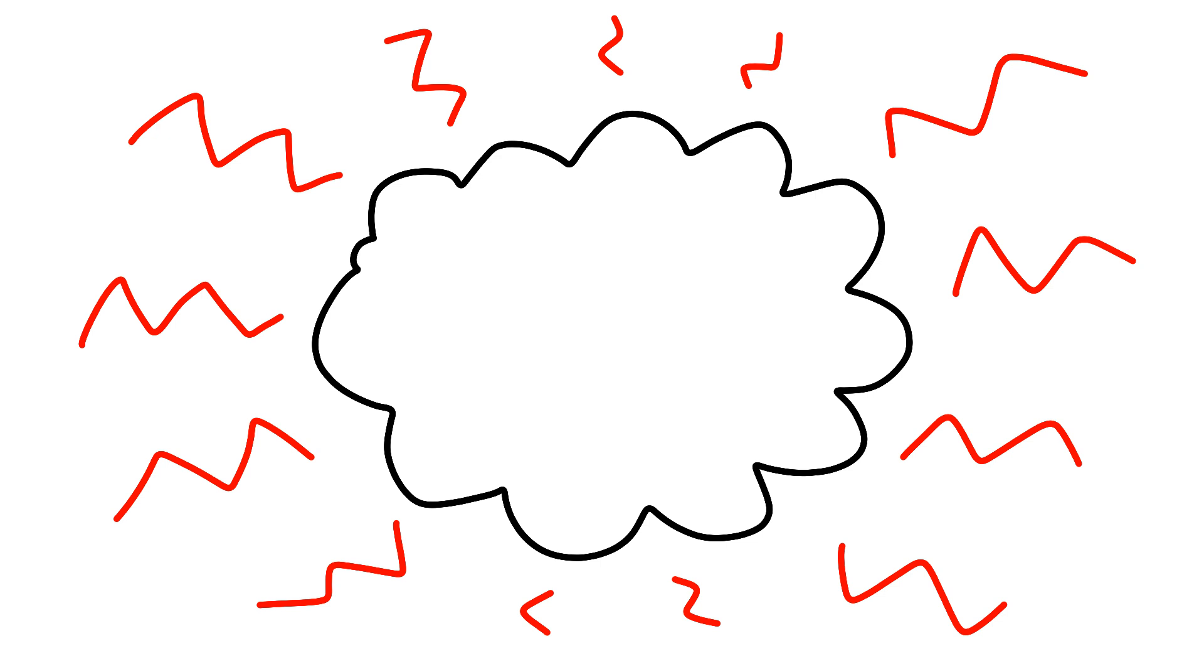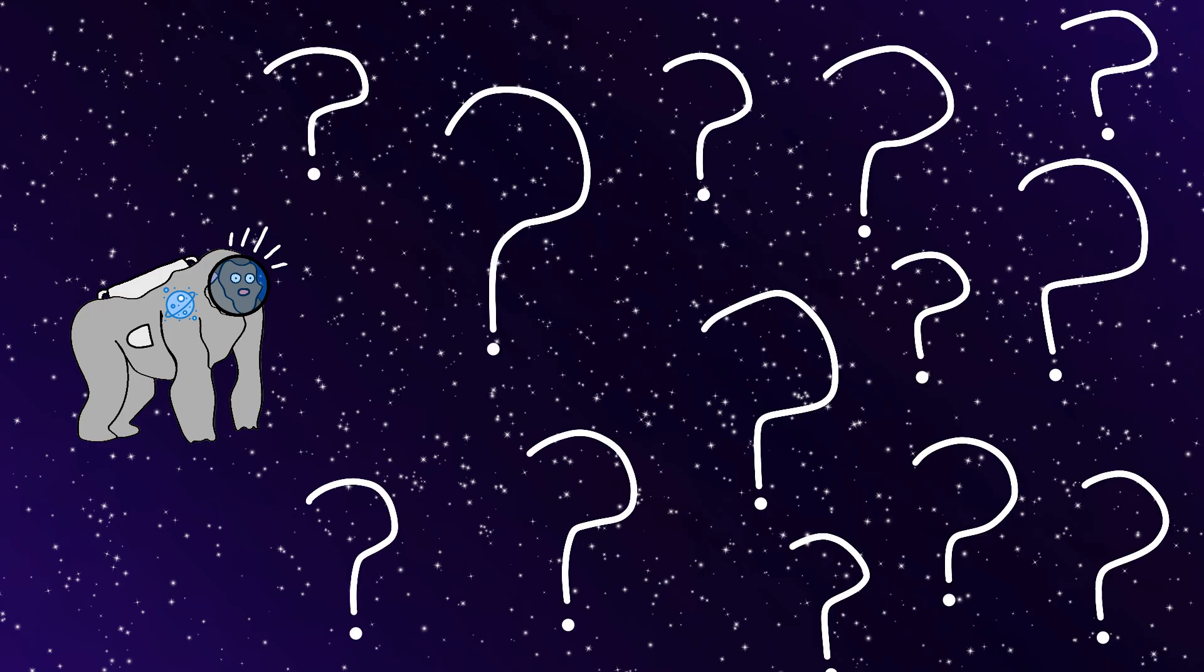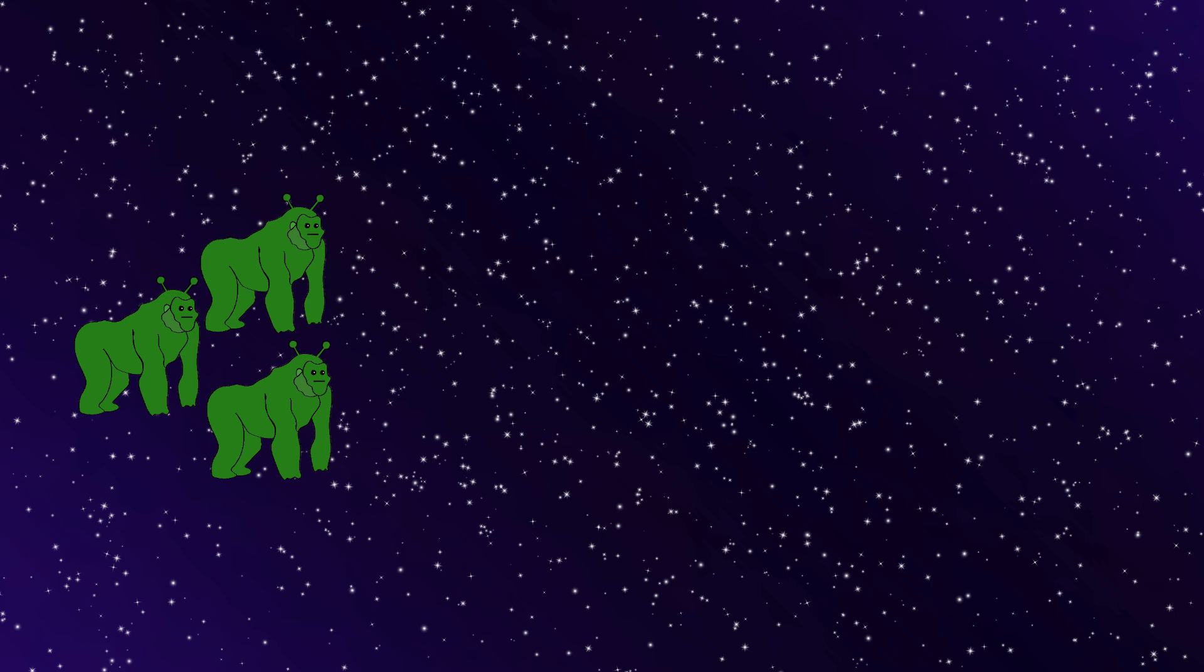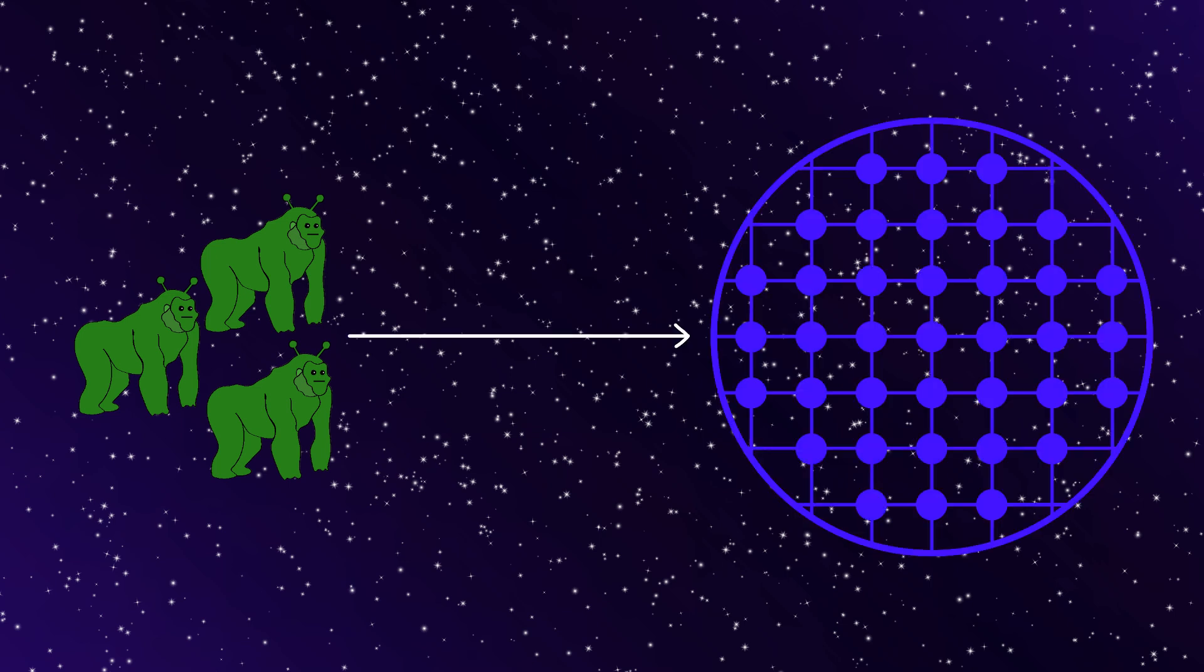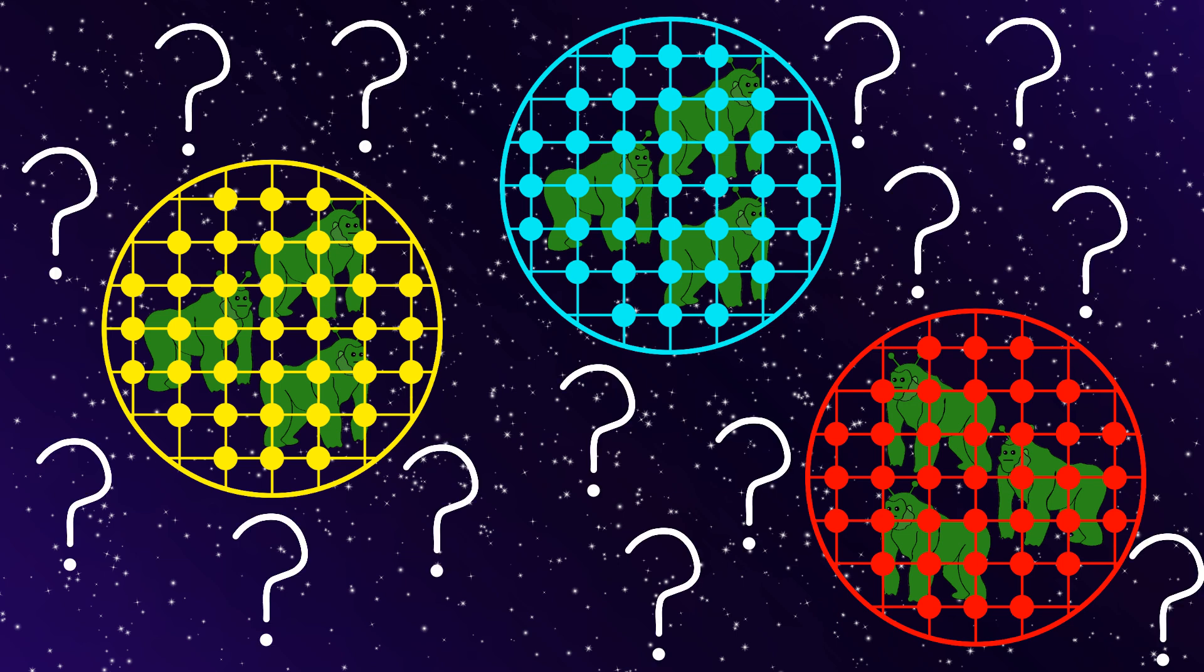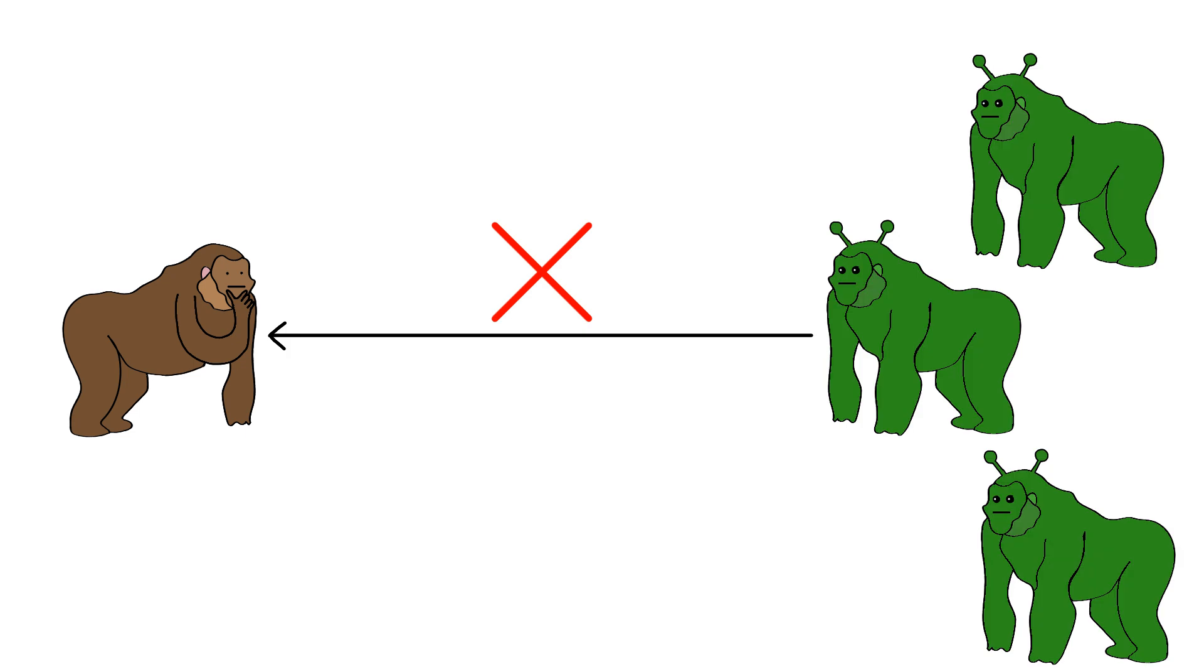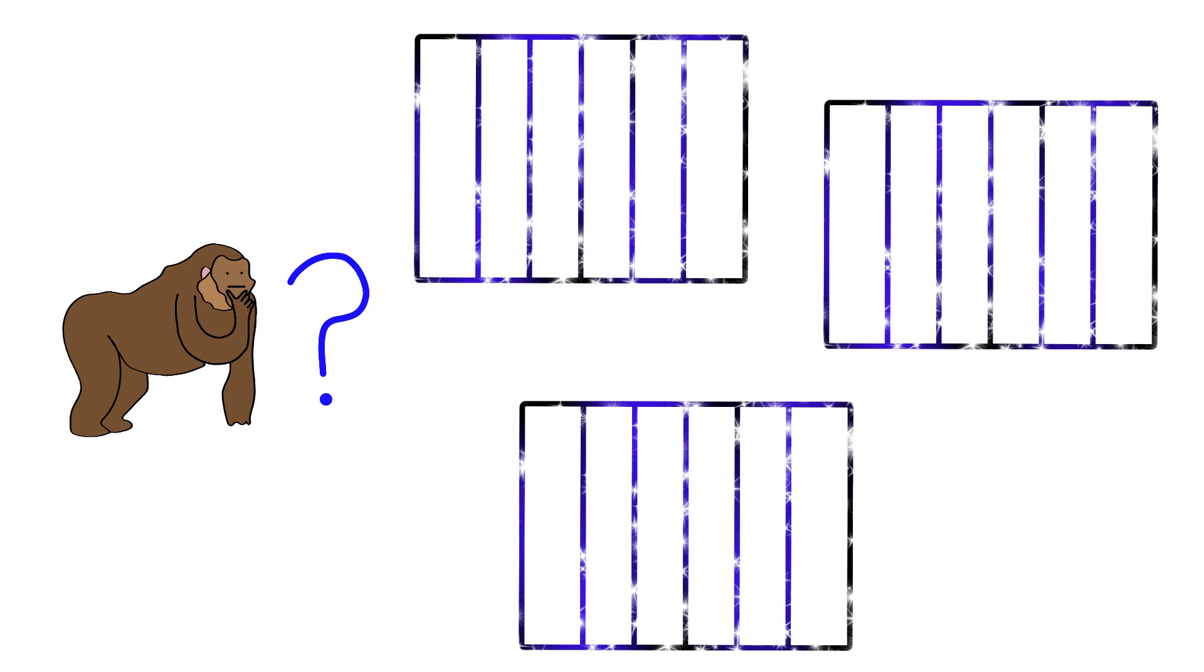But the most chilling thought is, Monkey realizes that somewhere in the universe, other civilizations might have made the same choice. And they're trapped inside their own perfect prisons, wondering if they made the right decision. And Monkey's thinking, maybe that's why we never hear from advanced alien civilizations. Maybe they all built their own cosmic cages.